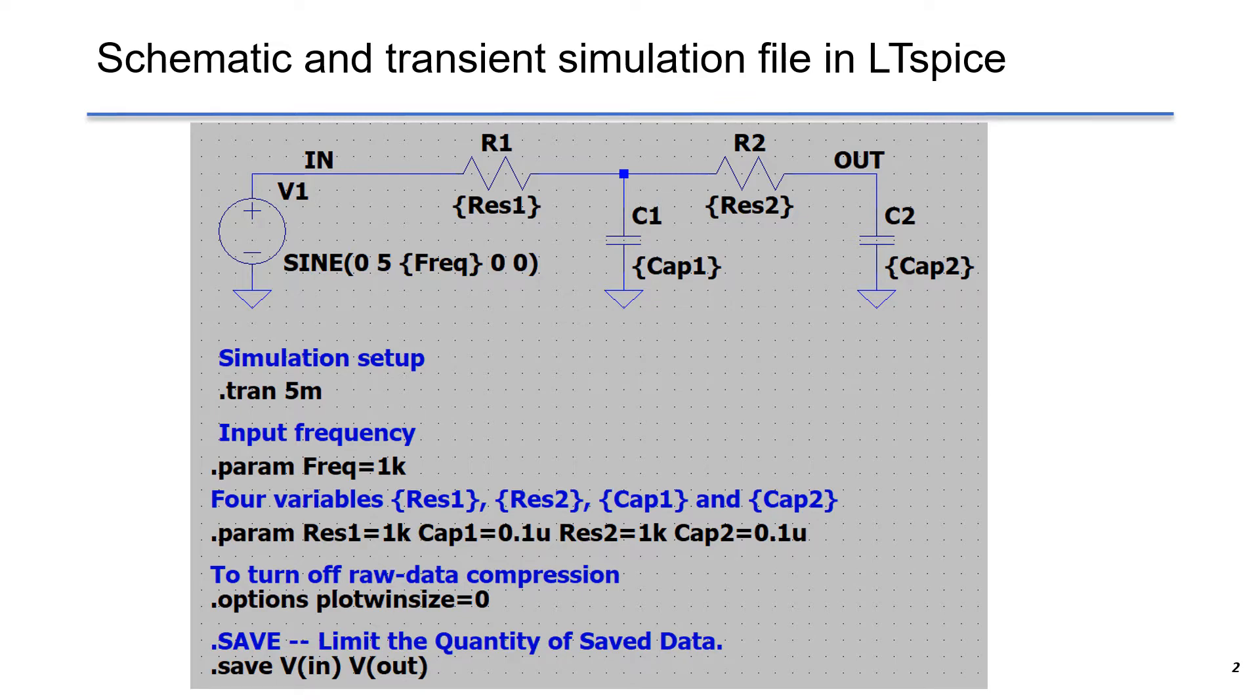Here is the schematic for the second-order RC filter consisting of two resistors and two capacitors. Sometimes people call it the cascaded RC filter because two RC filters are cascaded together as two stages.